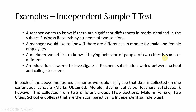A marketer would like to know if the buying behavior of people from two cities differs — the two cities are the categorical variable and buying behavior is the dependent variable. An educationist wants to investigate if teacher satisfaction varies between school and college teachers, where school and college are the categories and teacher satisfaction is the dependent variable.